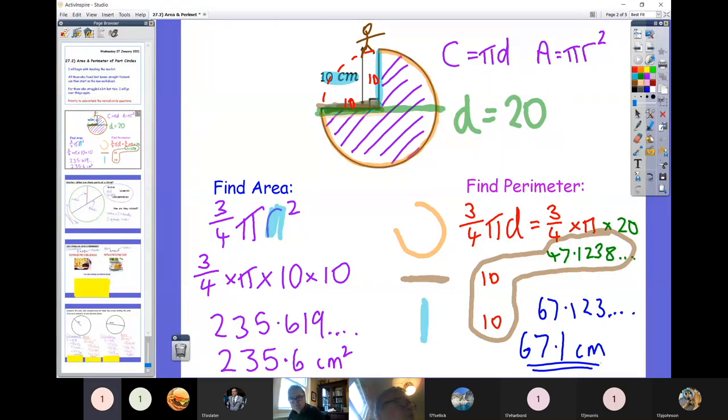Fran, you've got a question. For half a circle, would it still be three quarters? It would be a half. Yeah, and if it was quarter of a circle, it would be a quarter. It's only three quarters because this particular question has three quarters of a circle. So don't just use three quarters all the time. Good question.